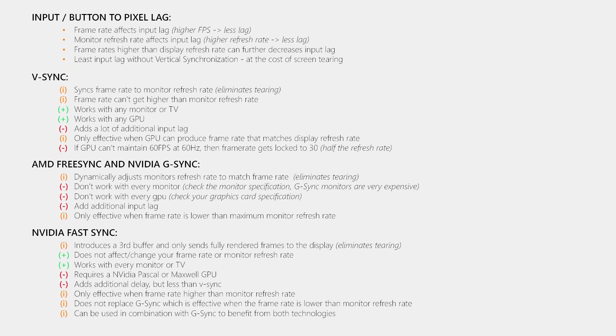I was quite surprised by the results of FastSync, as I did not expect the delay increase to be so small. However, as I said in the beginning, we do not only want the game to feel responsive — we also want the motion we see on our monitor to be smooth. So please make sure that you switch the quality setting in the YouTube player to a 60fps stream, as otherwise you will not see the differences in the examples I am going to show you now.